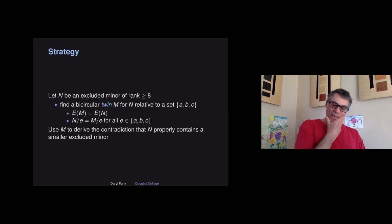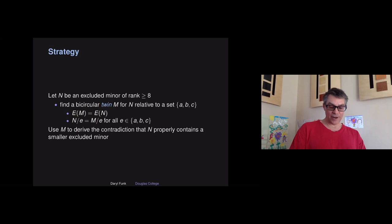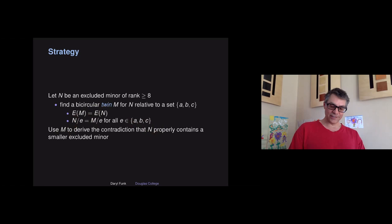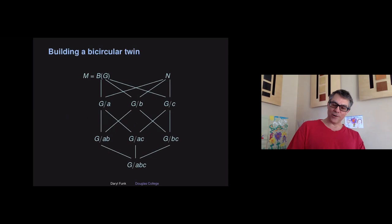Here's our strategy. Let N be an excluded minor of rank at least eight. We're going to construct a bicircular twin M for N relative to a set of three elements A, B, C. A bicircular twin for N is a matroid on the same ground set such that however I contract any element A, B, or C from each of those matroids, the resulting matroids are the same. Then we'll use the twin to show that N is quasi-graphic, and then use that quasi-graphic structure to derive the contradiction that N contains a smaller excluded minor. We start with our excluded minor, find three elements A, B, and C, contract them one at a time and then two at a time, and from the graphs we see — since we'll be bicircular as soon as we contract somebody — build a graph that agrees on contractions with all of these.